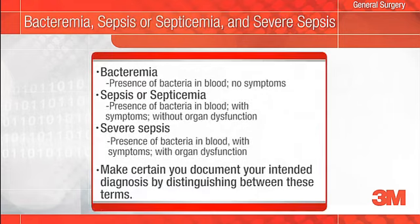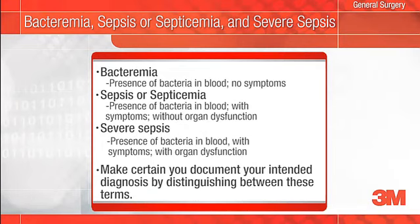Sometimes we use the terms bacteremia, sepsis or septicemia, and severe sepsis interchangeably or indiscriminately in records, when in fact these terms are different diagnoses resulting in different codes. Bacteremia describes the presence of bacteria in the blood without symptoms. Sepsis and septicemia describe the patient with symptoms but without associated organ dysfunction. Severe sepsis describes the patient with associated organ dysfunction. Make certain you clearly document the term that accurately describes your patient's condition.